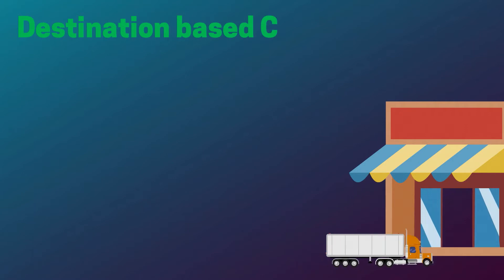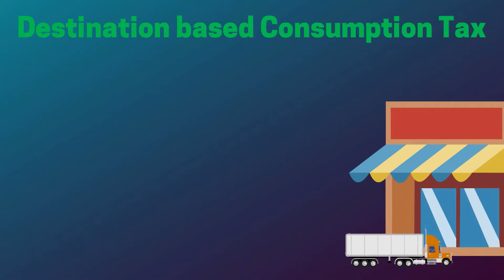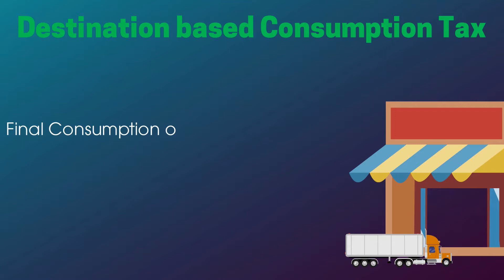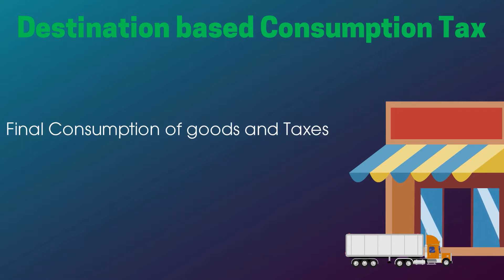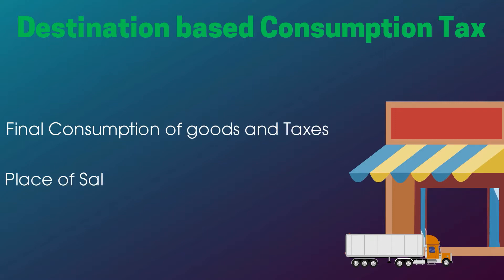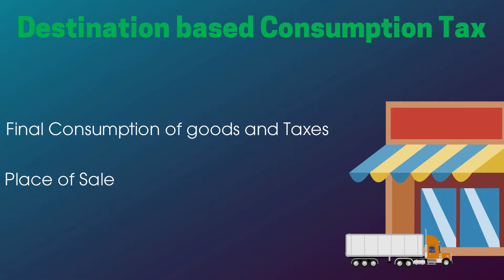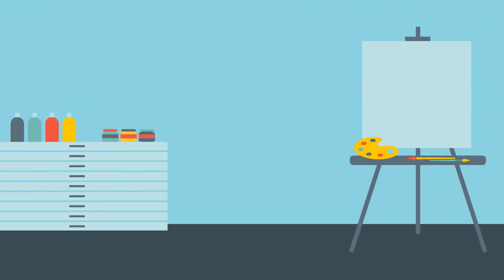The next term is 'destination-based consumption tax,' which signifies that tax is charged at the place of final consumption of goods and services. Earlier, tax was charged at the place of sale, but now the power to charge tax rests in the hands of the taxing authority having jurisdiction in the final place of consumption. This is one of the major changes introduced within the GST regime.